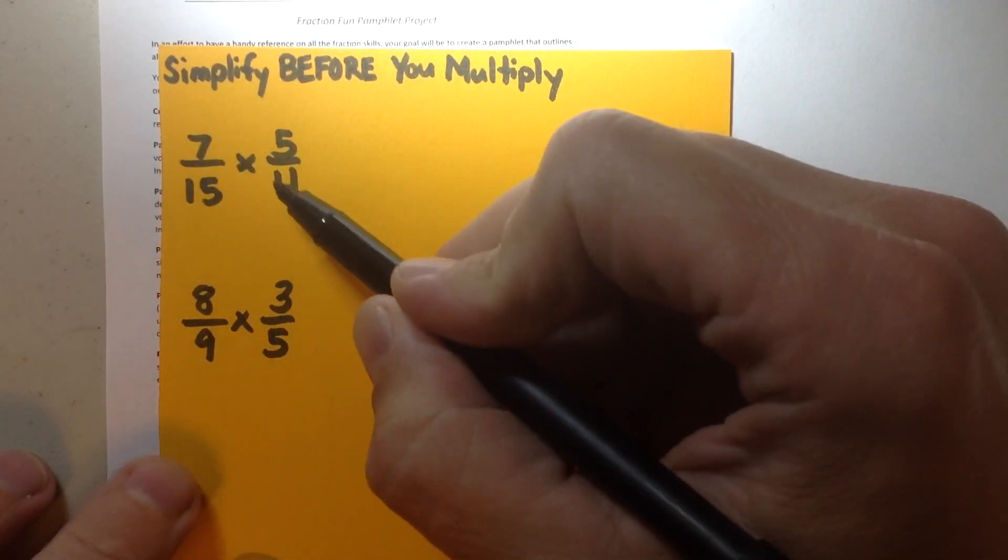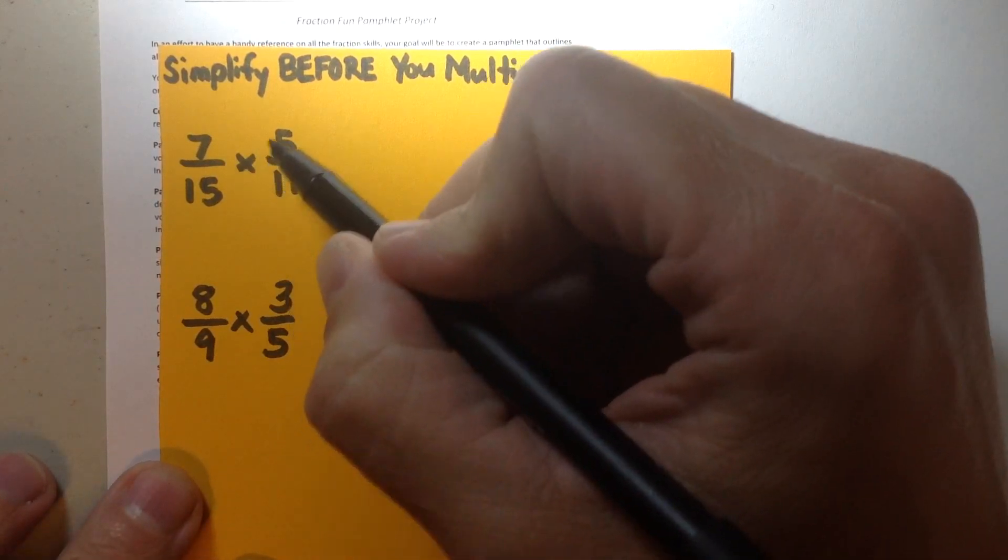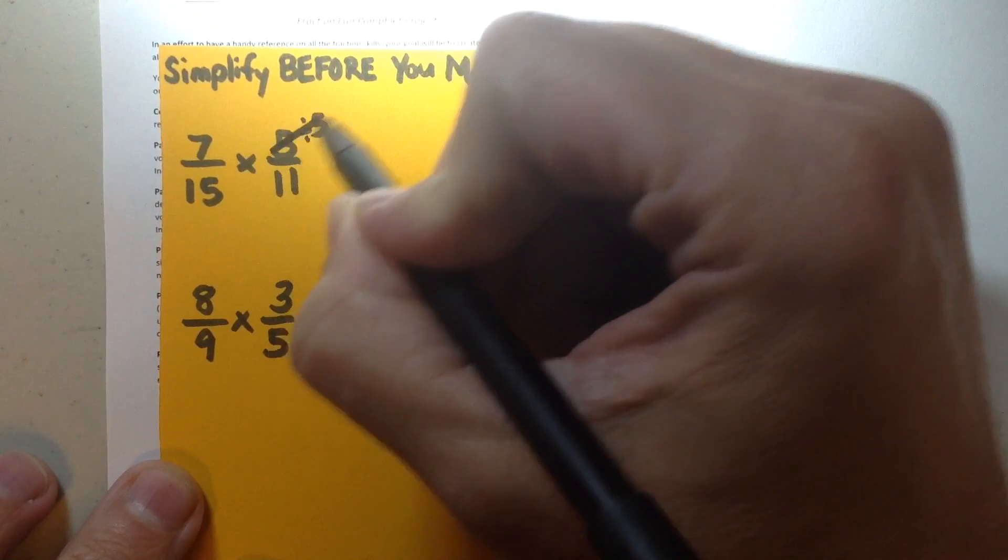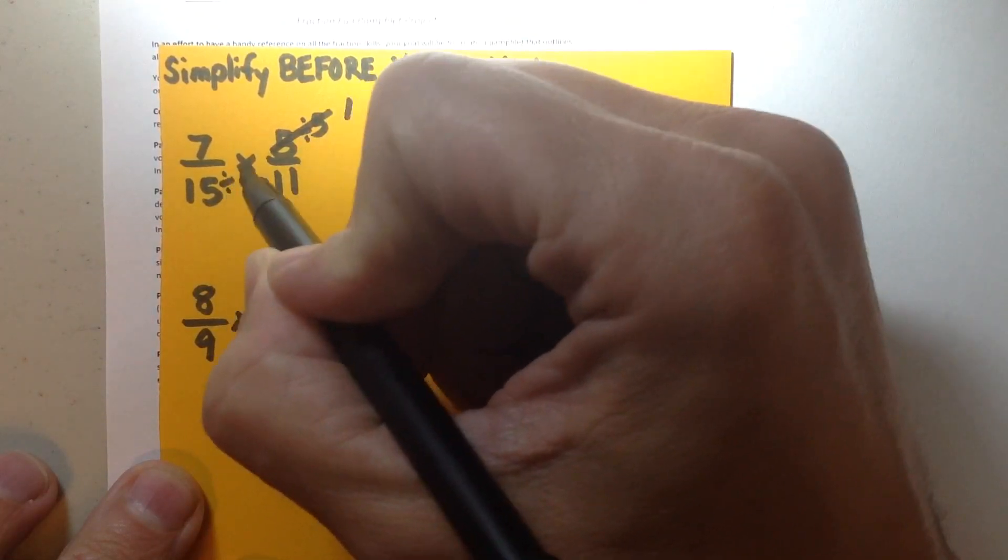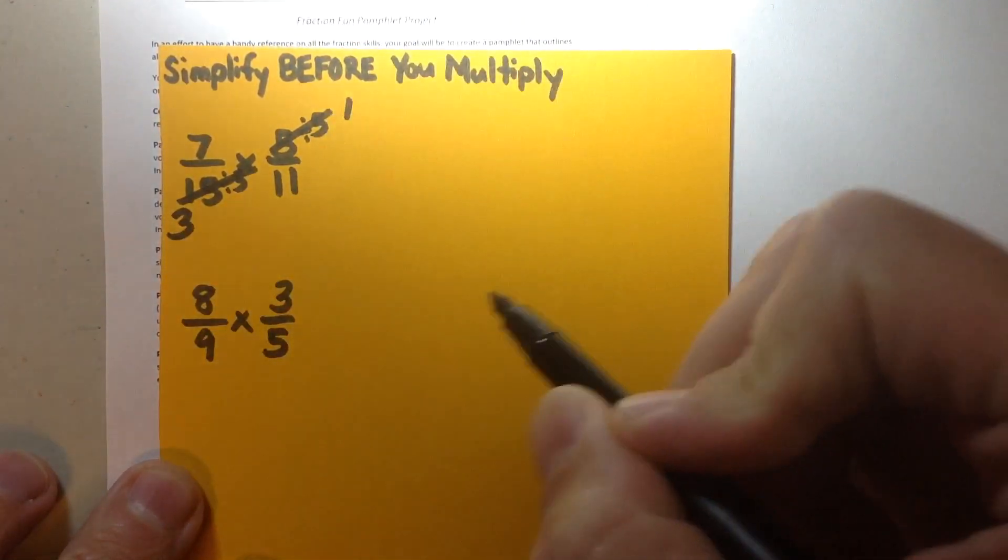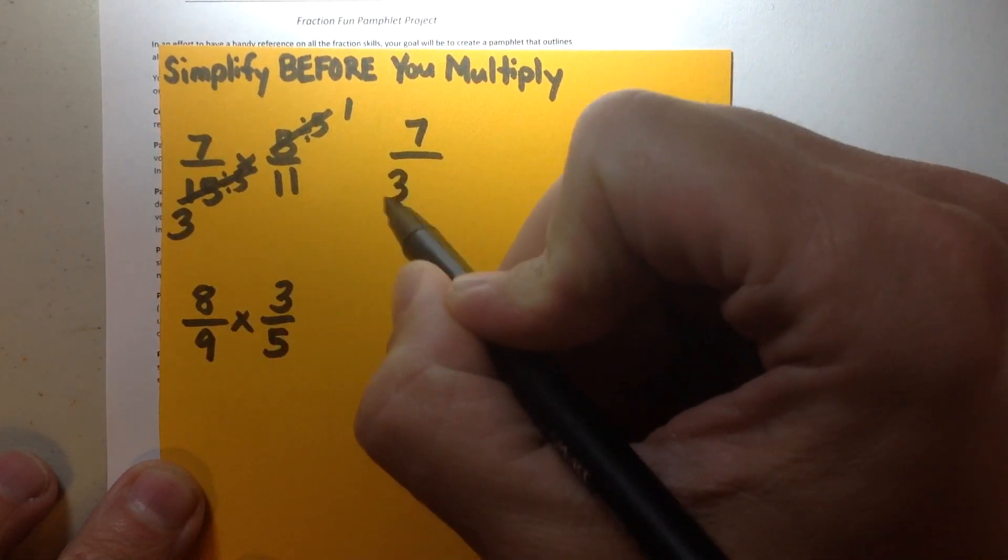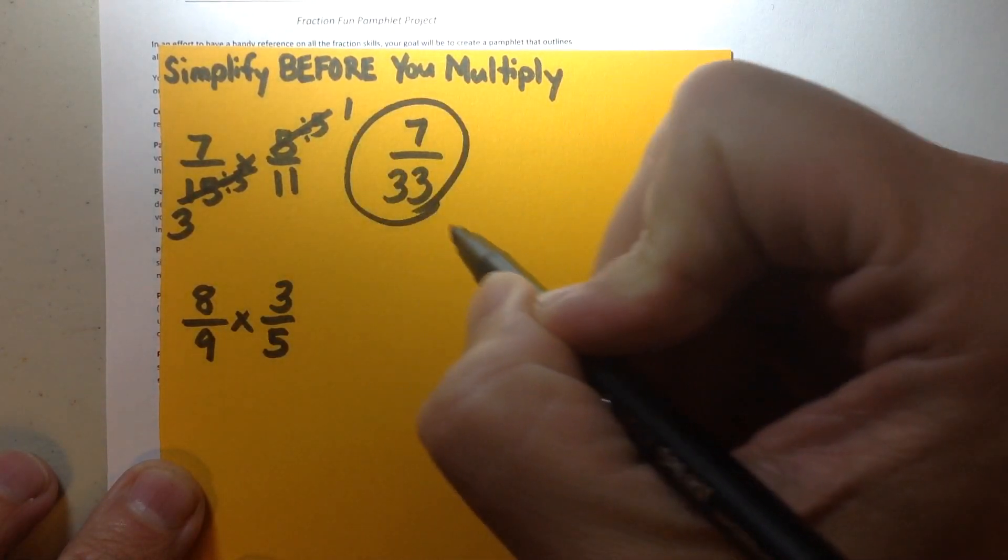Now as I look I can see the 7 and the 11 share no common factors, but the 5 and the 15 sure do. I know that 5 divided by 5 equals 1, and 15 divided by 5 equals 3, creating a new problem. 7 times 1 is 7, 3 times 11 is 33, and that's my final answer.